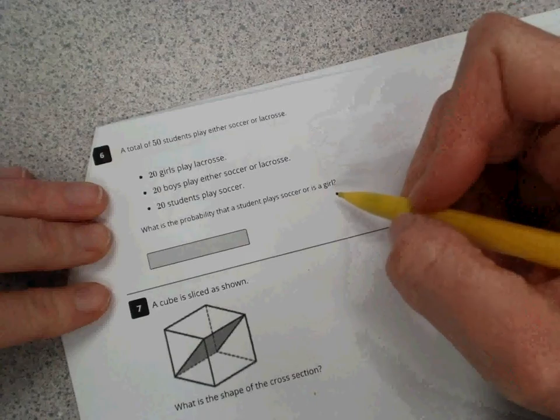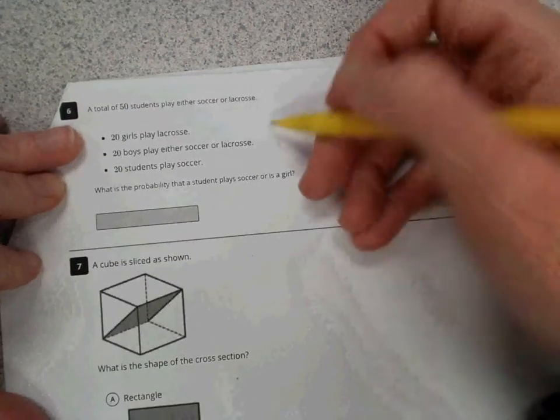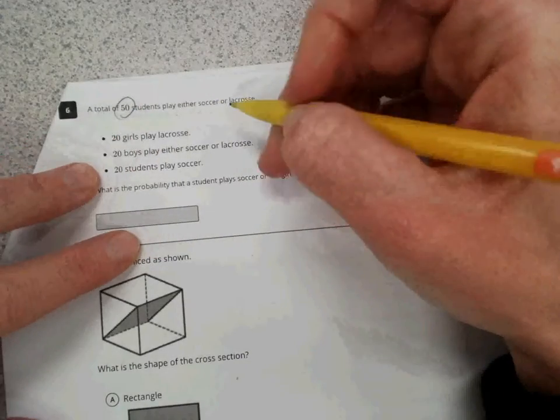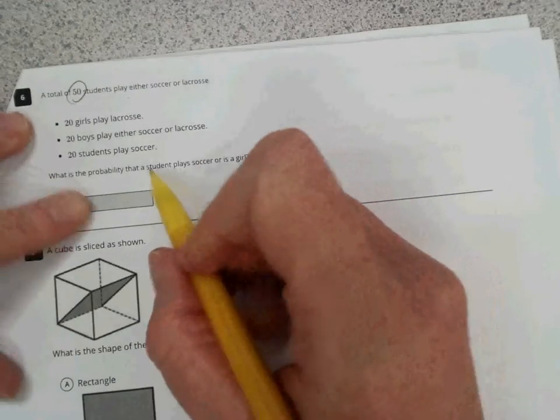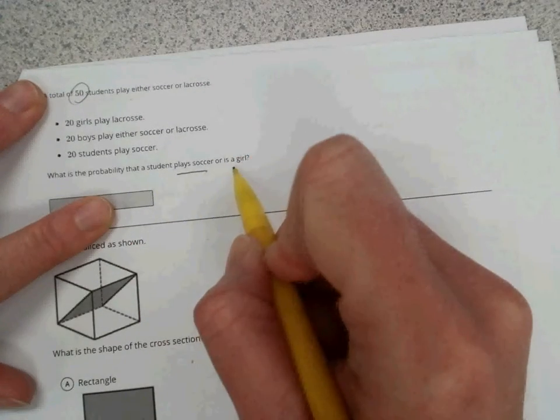Question number six deals with probability, and we're talking here about 50 students that play either lacrosse or soccer with a given breakdown. And the question asks, what is the probability that a student plays soccer or is a girl?